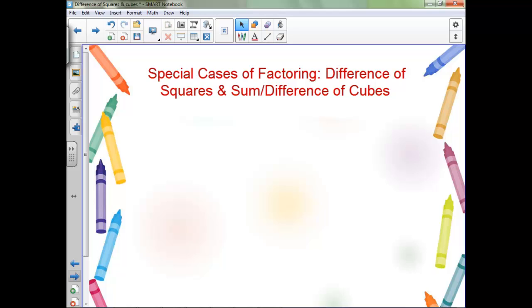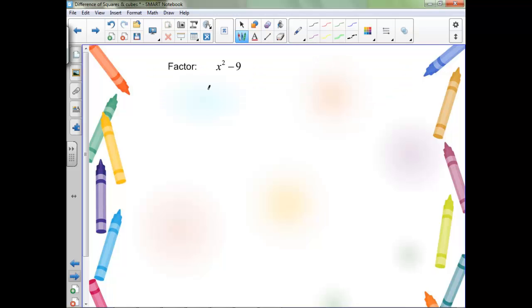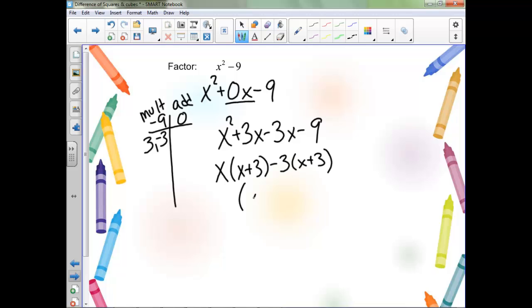Now what if we have something like this? This one is going to help us if we rewrite it with a plus 0x in the middle, because if we have 0x we can replace that so we at least have this middle term. Now we can do this the same way, so we need to multiply to negative 9 but we need to add to 0. So positive 3 and negative 3 are really our only options here. Notice if we don't have a middle term, you can just put one in there with a 0 as a coefficient.